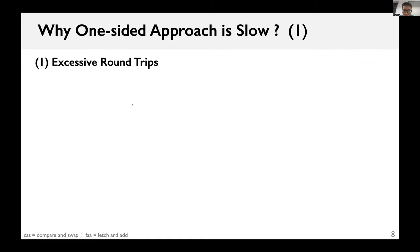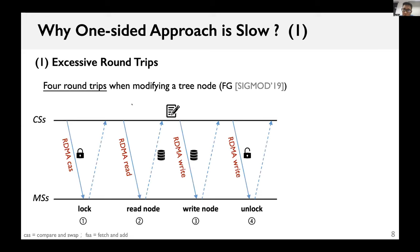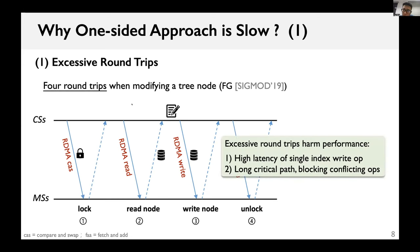The first is excessive roundtrips. For example, when modifying a tree node, a client thread needs four roundtrips: first, it acquires the exclusive lock of the tree node; second, it fetches the tree node by RDMA read; third, it writes back the modified tree node by RDMA write; finally, it releases the lock. Excessive roundtrips harm performance in two aspects: it leads to high latency of a single index write operation, and it makes long critical paths, so conflicting write operations are more likely to be blocked during concurrent execution.